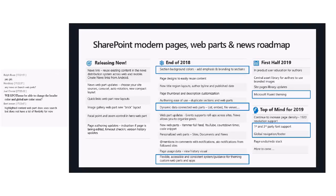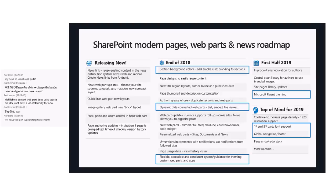On the question of whether SharePoint Online theme can change the header color and global navigation color — there will absolutely be investments on the theme side. The suite navigation bar at the top will never be managed by a SharePoint theme because that's an Office 365 level bar. But the main idea is that you're able to color and define any element and section in modern pages, and if there are any gaps, those will absolutely be addressed.